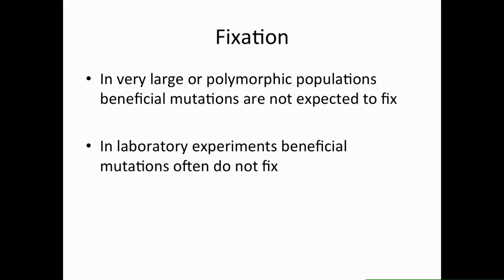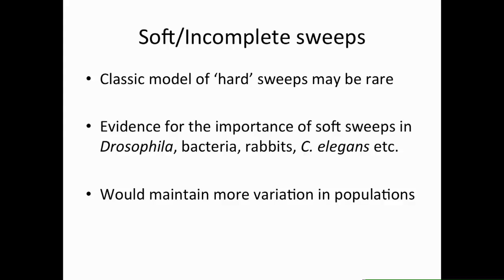Along with all of this excess variation, there's also an expectation that in large or very polymorphic populations with a high mutation rate, beneficial mutations might not go to fixation. Indeed, in many laboratory experiments, that's what they see — beneficial mutations often do not fix. So if you're seeing large populations with a lot of variation and mutational input, this classic model of a hard sweep might actually be really rare.